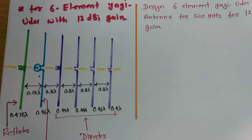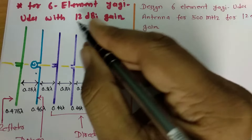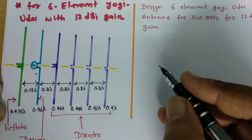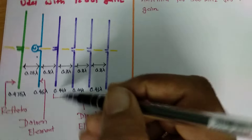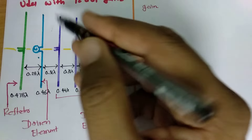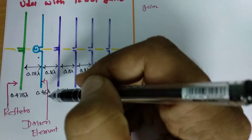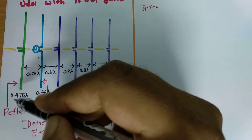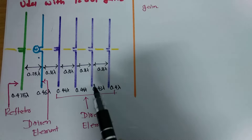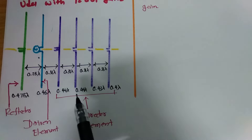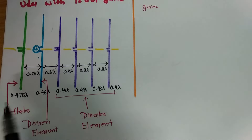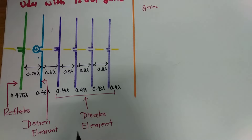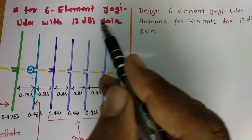Next is the 6 element Yagi-Uda antenna for 12 dB gain. Remember these values for calculation: the driven element length is 0.46 lambda, the reflector element length is 0.475 lambda, and the four director elements have lengths of 0.44, 0.44, 0.43, and 0.4 lambda respectively.